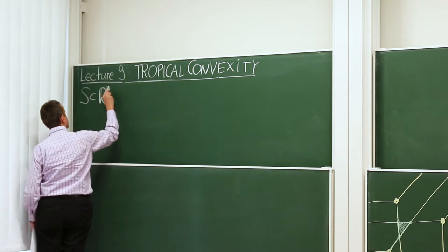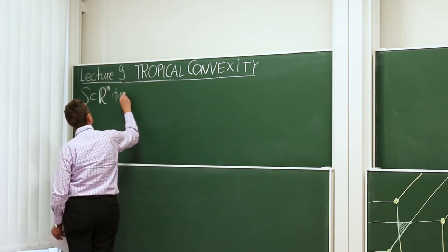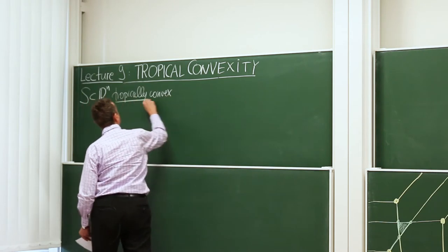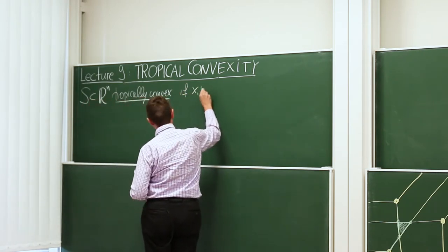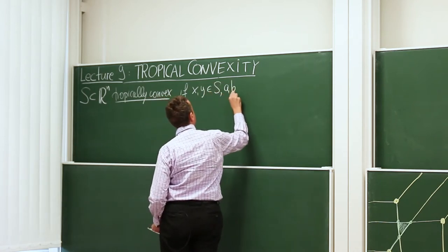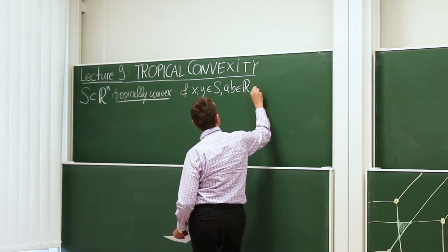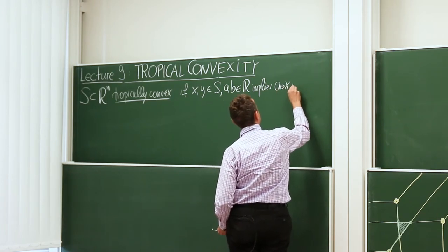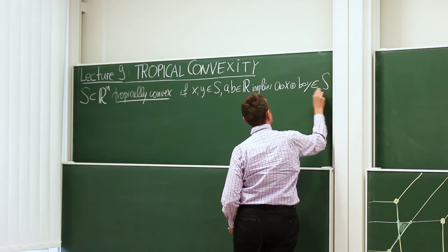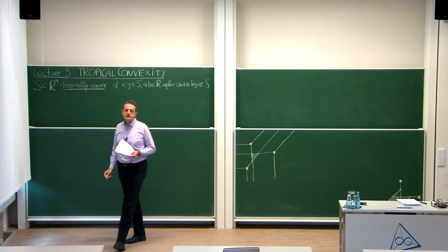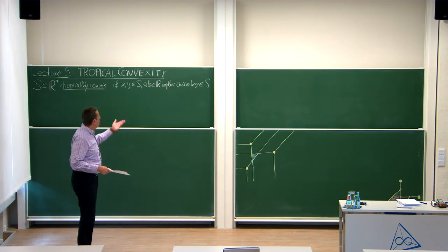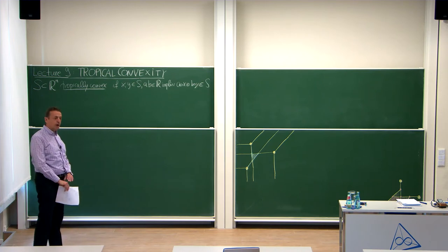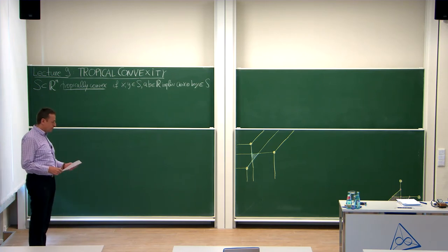Let's say S is any subset of R to the N. I'm going to say that subset is tropically convex if the following holds: if X and Y are elements in this set and A and B are any real numbers, then this implies that the corresponding tropical linear combination, A times X plus B times Y, is also in the set. A times X is the usual scalar times vector multiplication carried out tropically, and then the plus is the minimum coordinate-wise of two vectors.